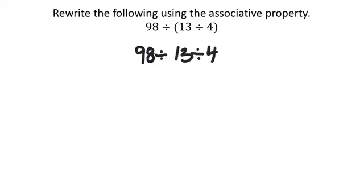I know some of you guys know the answer already, but with the associative property, what would happen is you'd move the parentheses. So where the parentheses were around the 13 and 4, I've now moved them around the 98 and 13.